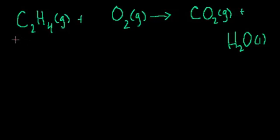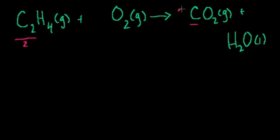So here I have two carbons on the left, and on the right-hand side I only have one carbon. Ideally I'd want two carbons on both sides of this equation, so let me put a 2 out here. My carbons are happy — I now have two carbons and two carbons.